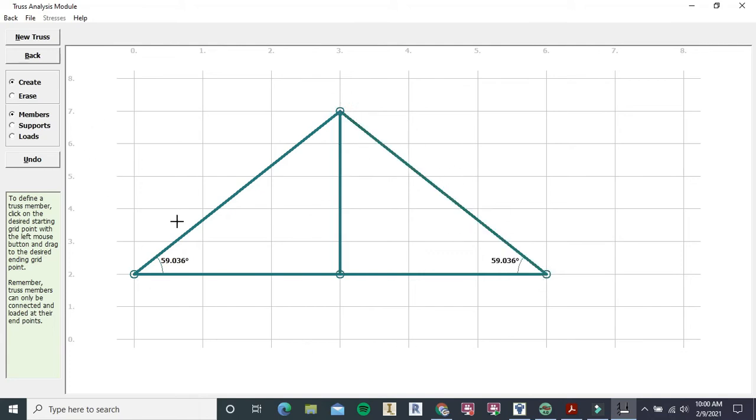Now if for some reason we mess up, we can always erase. To do that, you click on erase, make sure you're still clicked on members, and then you simply redraw the member. Just like I drew it, you'll see that it erases it. So we'll go ahead and put that one back.